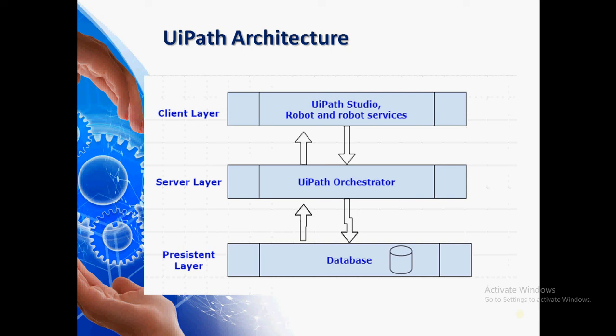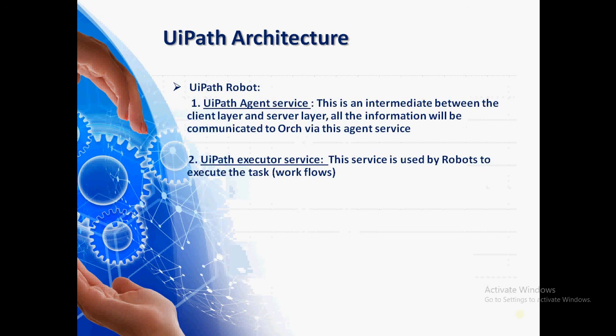UiPath robot comes with two services: one is UiPath agent service and one is UiPath executor service. The agent service acts as an intermediate between the client layer and the server layer, so we can also call it a web service at a very generic level. As we know, the robot is meant for execution purposes, and within the robot we have these two services.